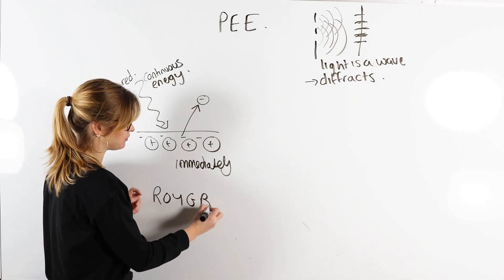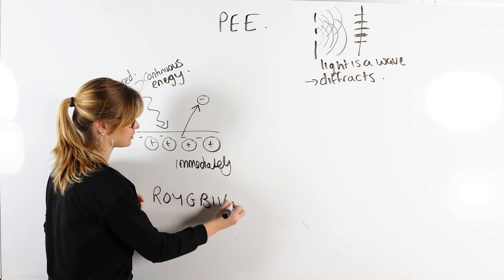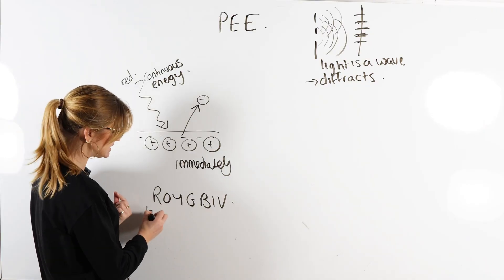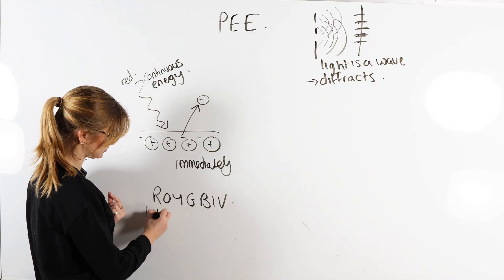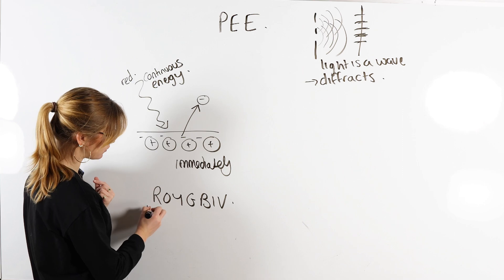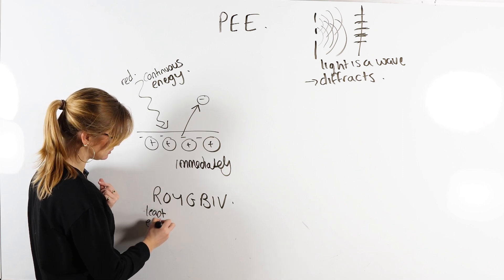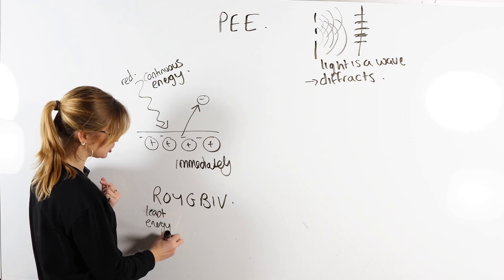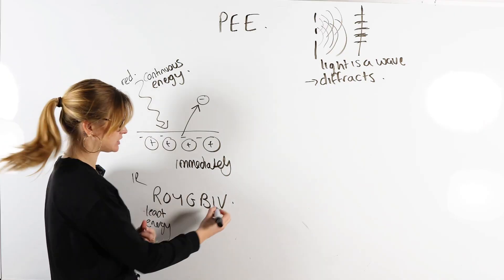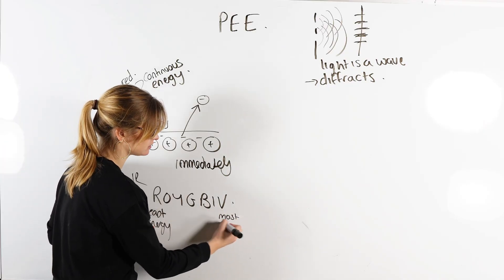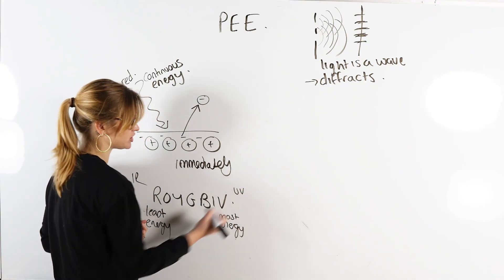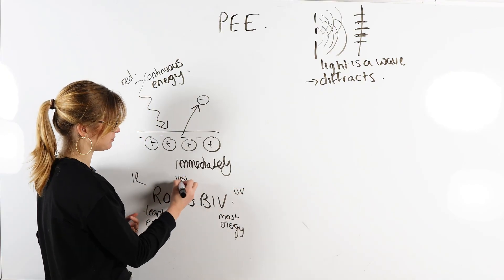They considered increasing the energy of the light. We know that visible light is split into the colours of the rainbow — ROYGBIV. Red light is always our least energy because it's towards the infrared part of the spectrum, and violet light has the most energy because it's towards the UV region of the spectrum. This is our visible spectrum.